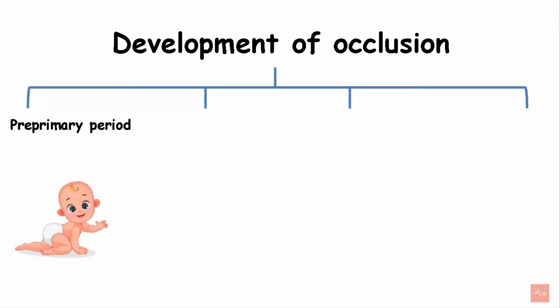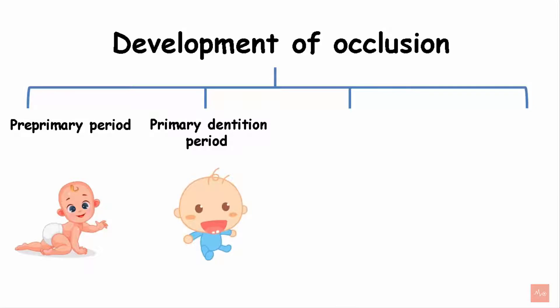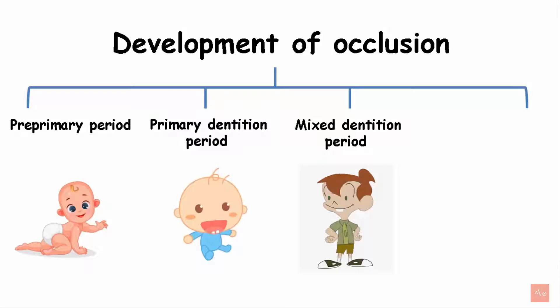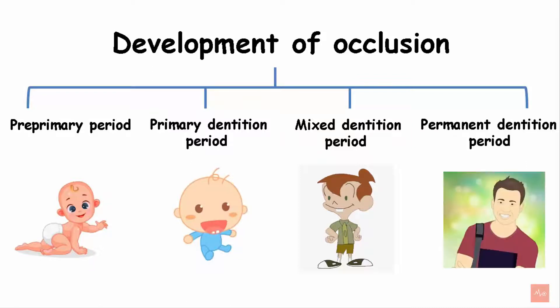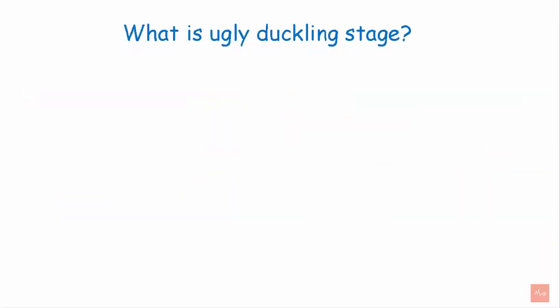The development of occlusion is divided into four parts. The first part is the pre-primary period wherein the babies do not have teeth and have gum pads initially. The second phase is the primary dentition period wherein the kids have milk teeth. The mixed dentition period is when the milk teeth start to fall off and the permanent dentition are seen. The last phase is the permanent dentition period wherein all the permanent teeth are seen.